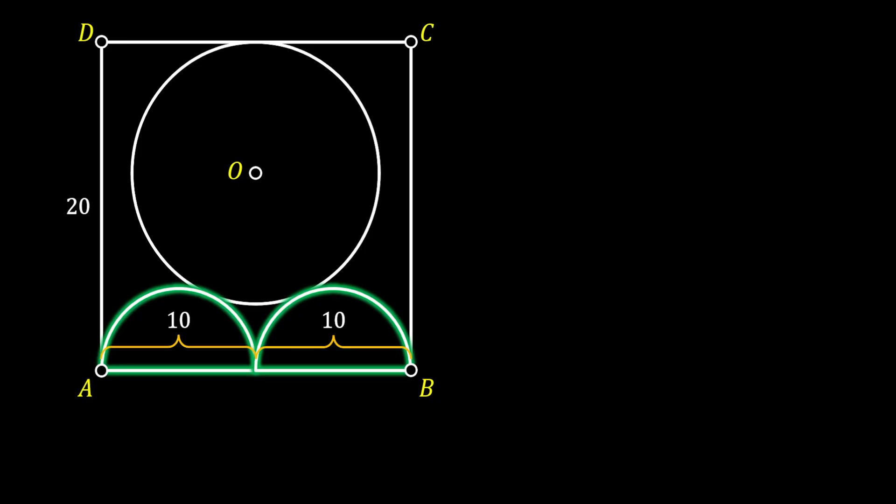Now, let's focus only on the semicircle on the right. We can label the center of this semicircle as P and the left vertex as Q. This point is also the midpoint of our bottom side of the square. Since the diameter of our semicircle is equal to 10, its radius is equal to 5, so the lines PB and PQ are equal to 5.